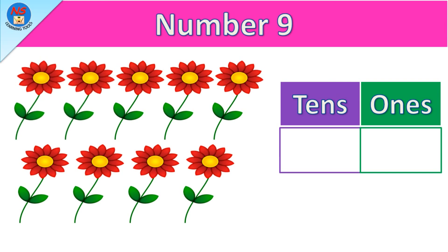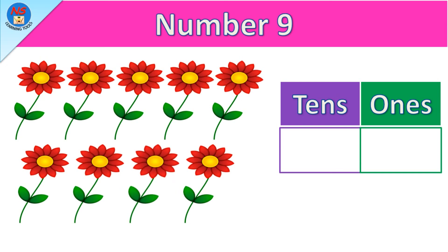Three, four, five, six, seven, eight, nine. Nine flowers. And it is represented as zero tens and nine ones.